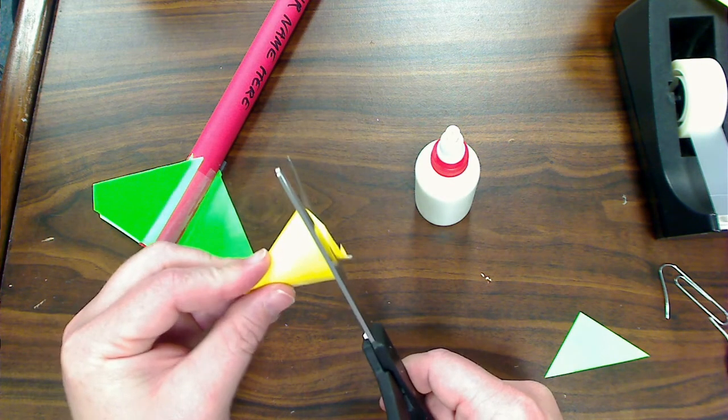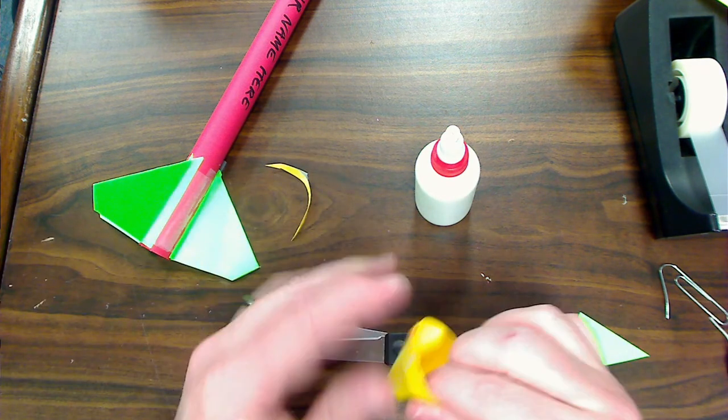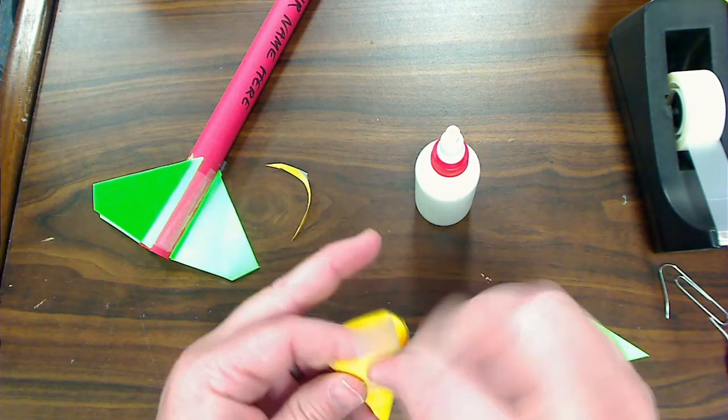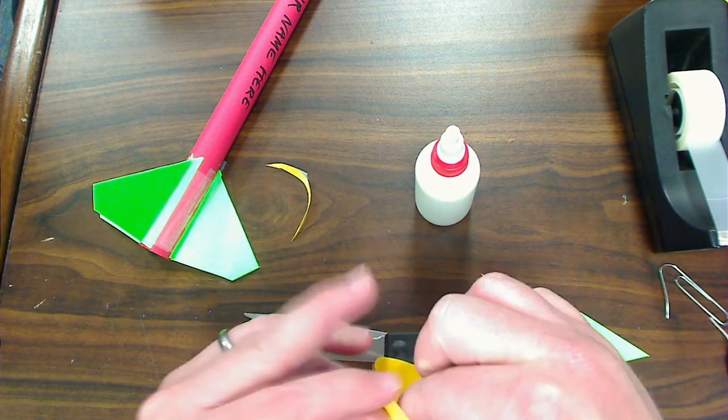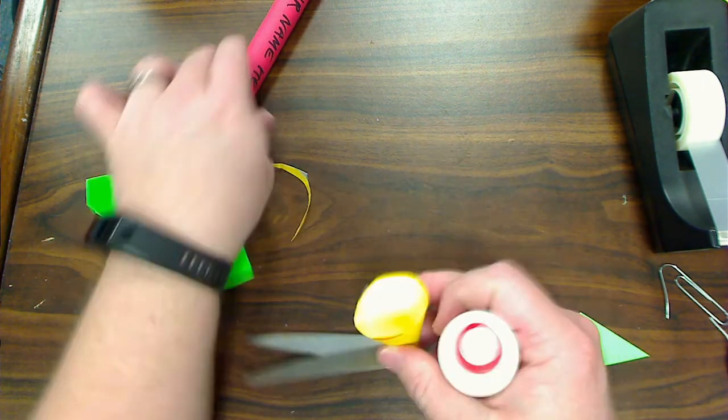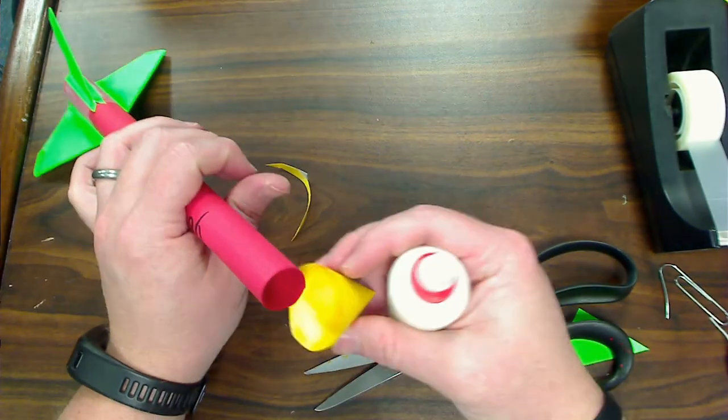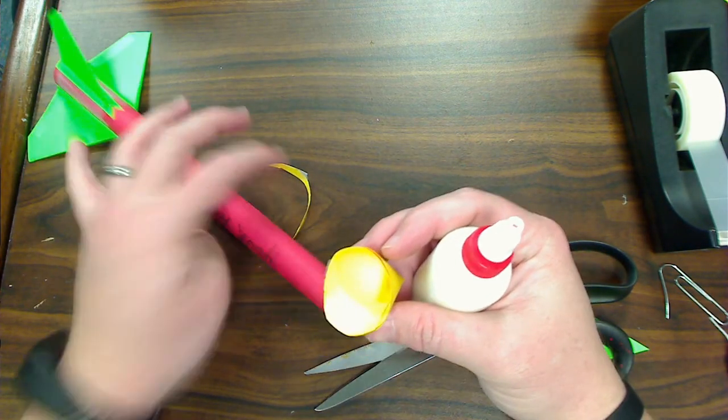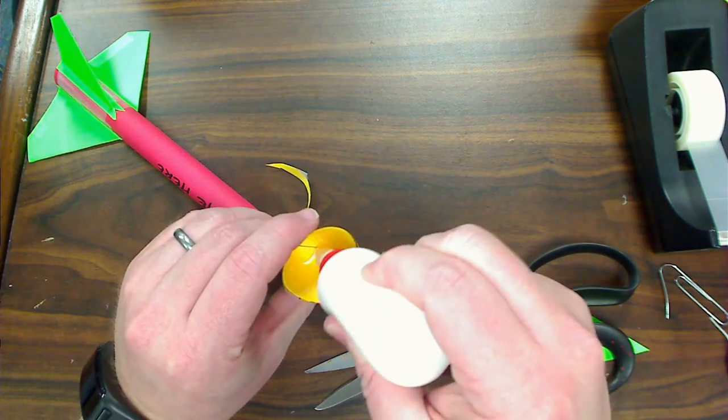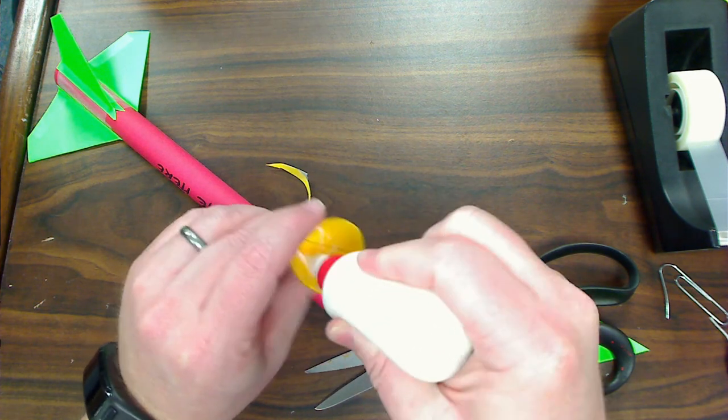Okay, so once you have your nose cone shaped and taped, you can trim off a little bit of the excess. You can reinforce it with a little bit more tape if you want the edges sealed like so. And then you are going to glue it onto the nose end of your rocket tube. So what you're going to do is you're going to put a little glue inside the nose cone in a circular pattern here.